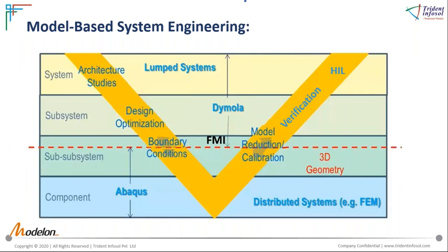In the V-shaped diagram we can see different levels of product development. The left hand side deals with model building from system to component level, using tools such as Abaqus, ANSYS, Dymola, and MATLAB Simulink. On the right hand side we see verification and validation through hardware-in-the-loop simulation and similar testing platforms. In industry, different tools must be used and the transfer of models between tools should be easy and simple — this can be achieved through FMI technology.